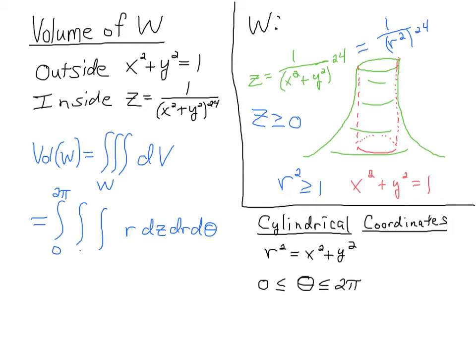Since we know theta is spanning between 0 and 2π, I'll just fill that in. And now I have to find the limits of integration for z and for r. I have x squared plus y squared is going to be greater than 1 for the outside of the cylinder. So that means r squared will be greater than 1, because r squared is x squared plus y squared.